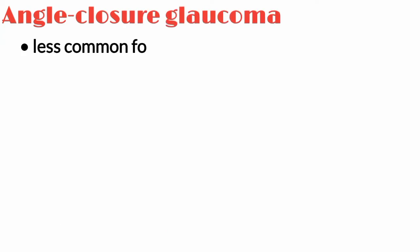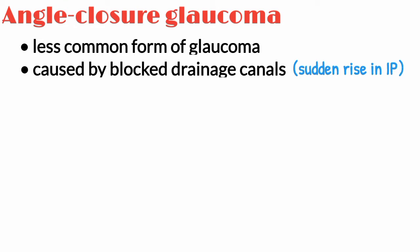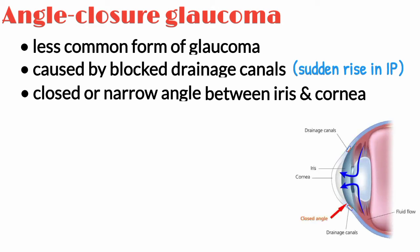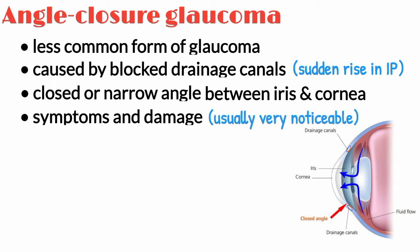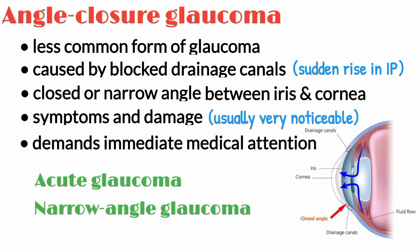Angle closure glaucoma is a less common form of glaucoma, mainly caused by blocked drainage canals, resulting in a sudden rise of intraocular pressure. It has a closed or narrow angle between the iris and cornea. It develops very quickly, and its symptoms and damage are usually very noticeable. This eye condition demands immediate medical attention. It is also called acute glaucoma or narrow angle glaucoma.